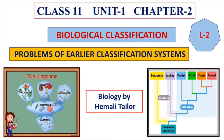Hello everyone. Today in this video of chapter number 2, we are going to study about problems of the earlier classification system. In the last video, we saw how different scientists came up and tried to classify organisms. We also saw that the classification by Aristotle and Linnaeus was not very perfect.